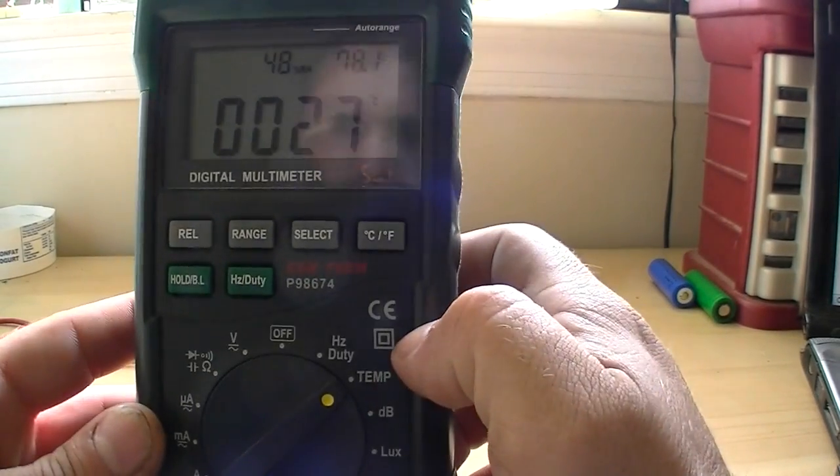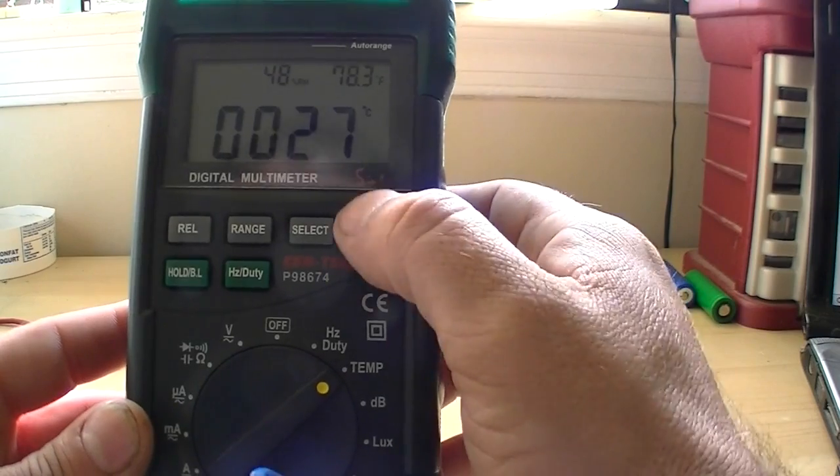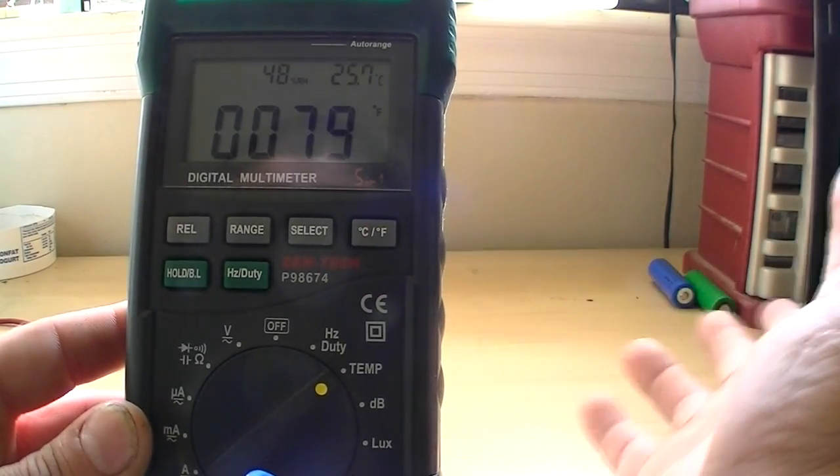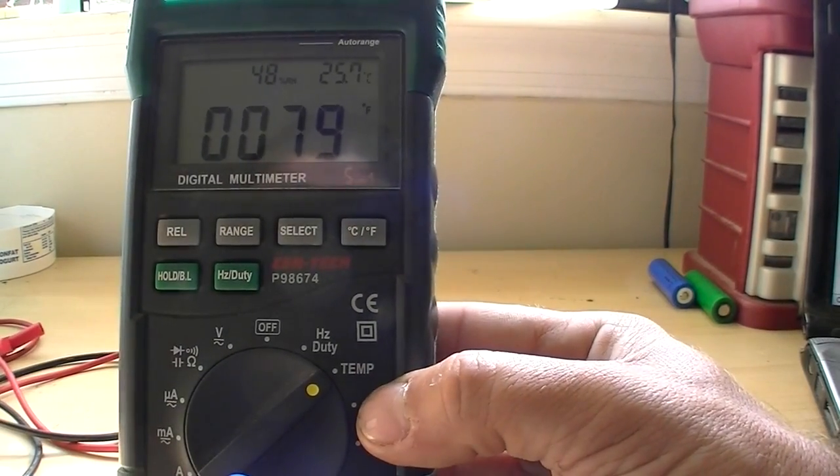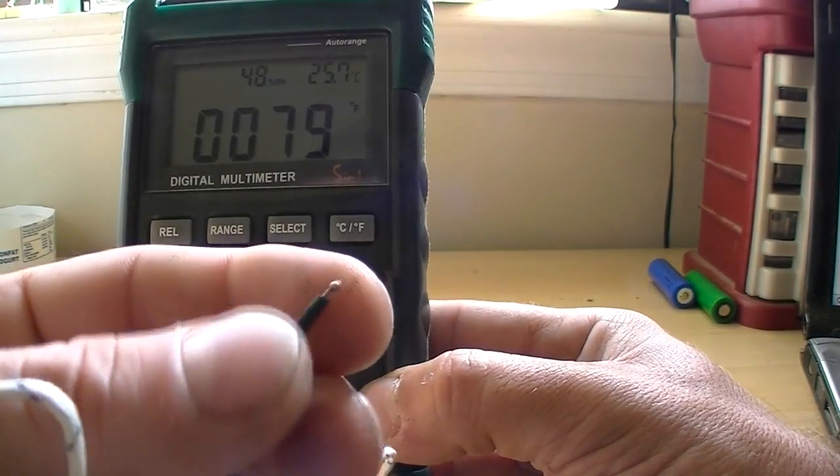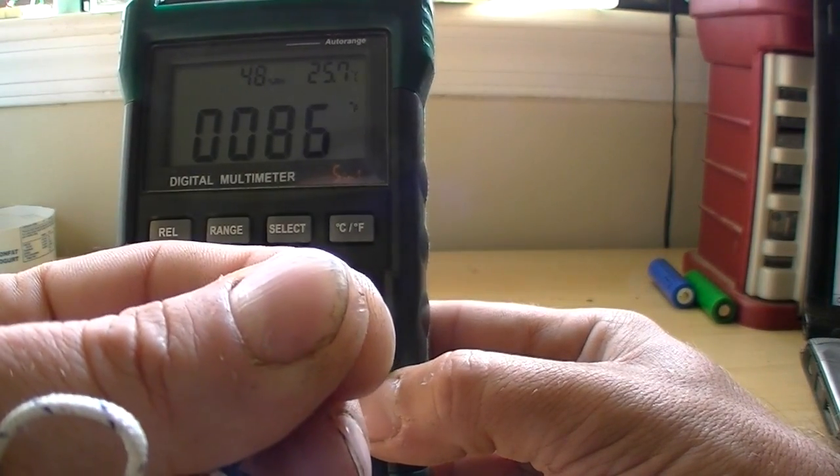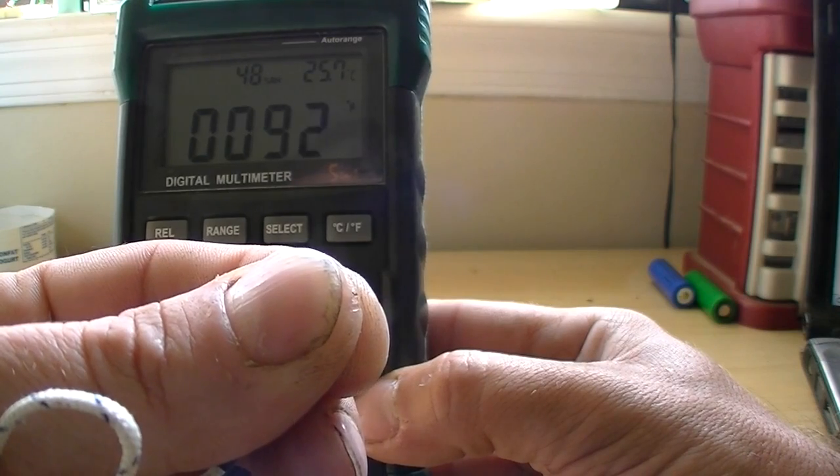And of course, for some reason it defaults to Celsius on there. Click it over to Fahrenheit and your temperature sensor now reads 79 degrees. You bring it up, put it on my finger. It responds very quickly, believe it or not.